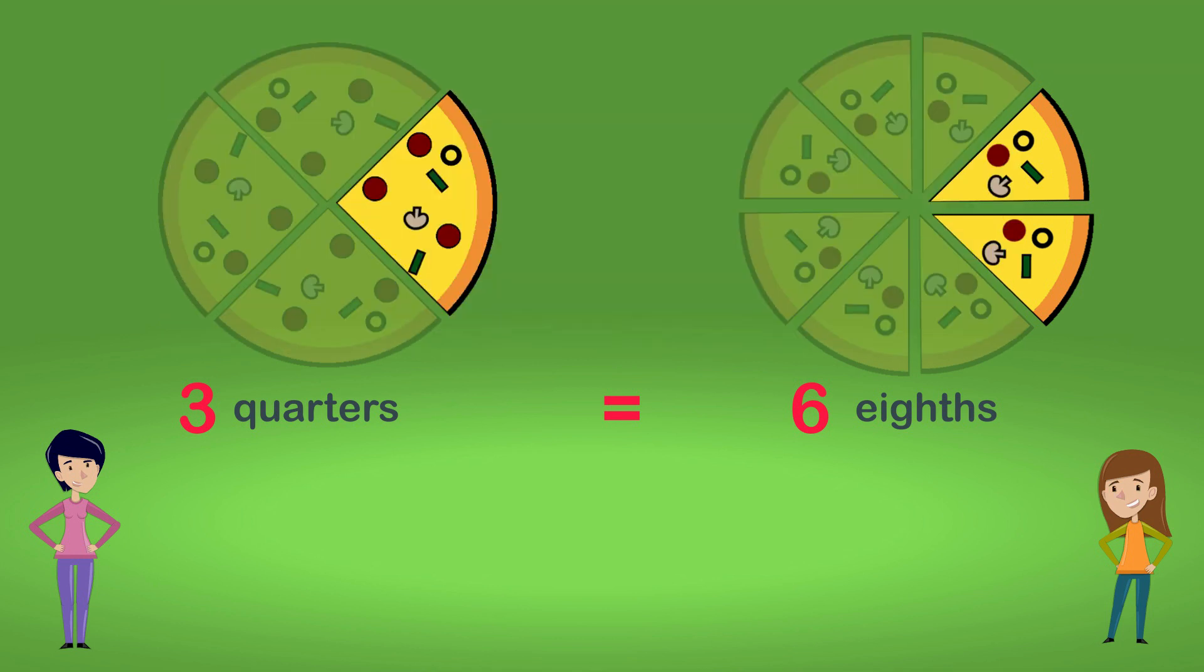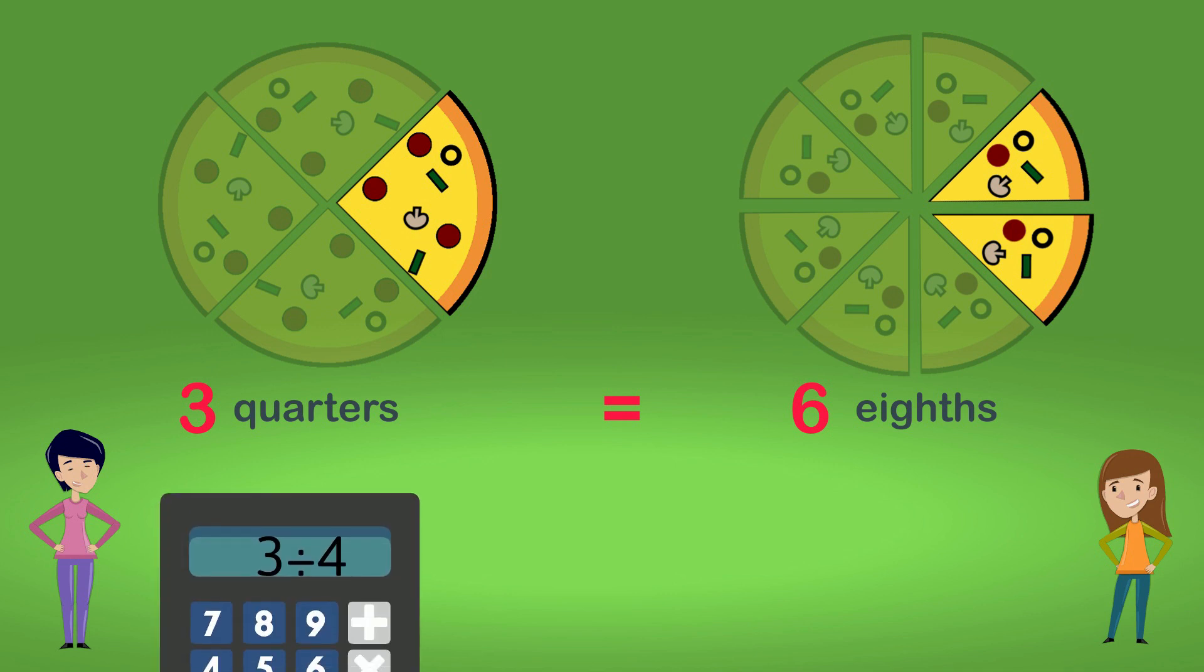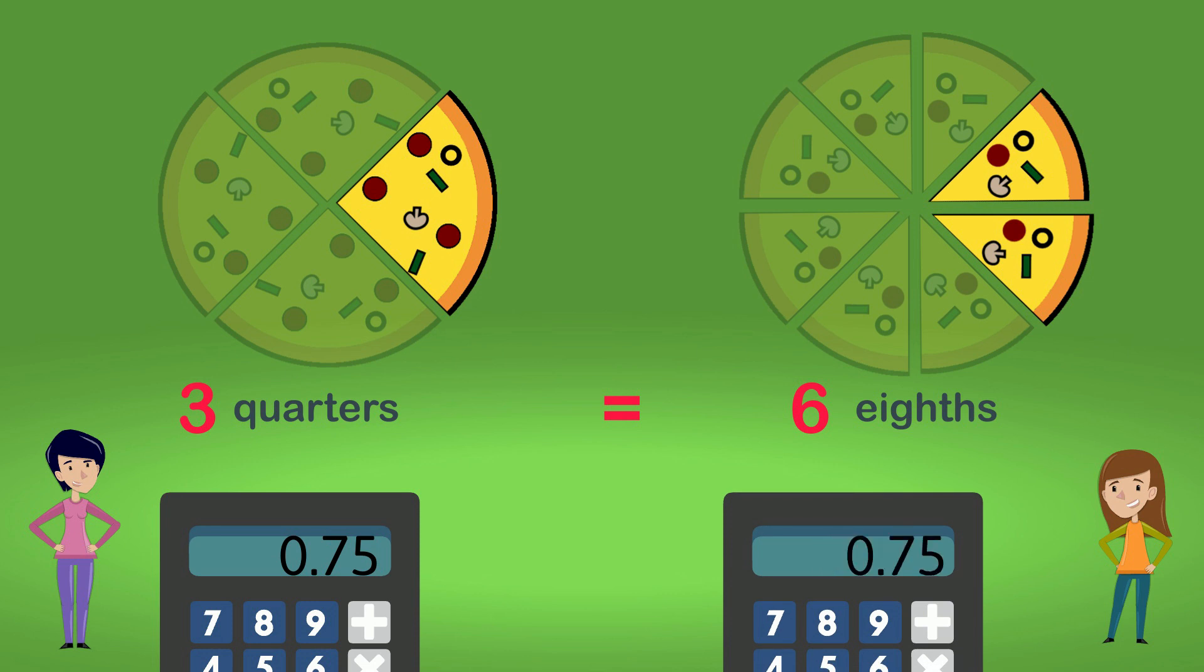We can also prove this by converting the fractions into decimals. Three divided by four is zero point seven five, and six divided by eight is also zero point seven five.